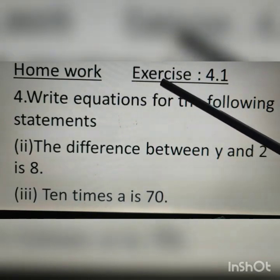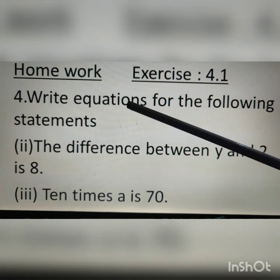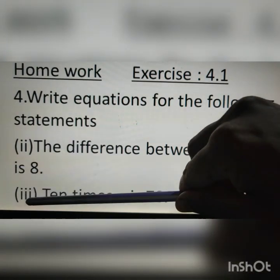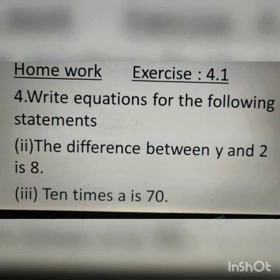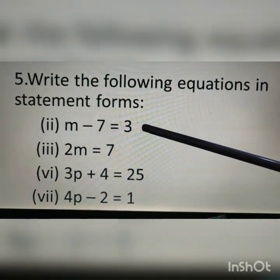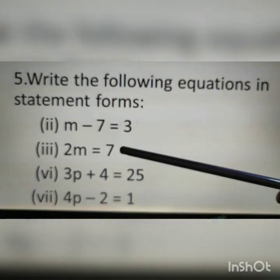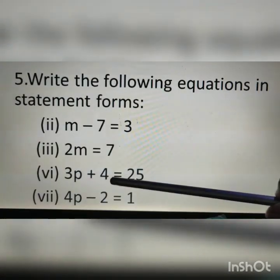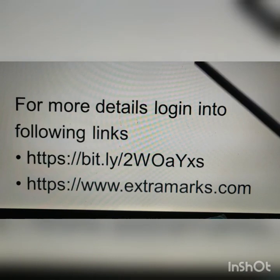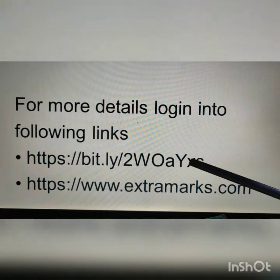Today, Exercise 4.1 is completed. Write all the questions and answers of Exercise 4.1 in your notebook. Today's homework: NCERT textbook, Exercise 4.1. Question number 4 — write equations for: the difference between Y and 2 is 8, and 10 times A is 70. Question number 5 — write the following equations in statement form: M minus 7 equals 3, 2M equals 7, 3P plus 4 equals 25, and 4P minus 2 equals 1. For more details, please log in to the links of Diksha and Extra Maps.